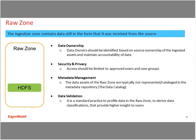Let's go into our data lake zones. The raw zone is our landing zone. The data ownership is the same as the source ownership. Security is limited to approved users and user groups. There may be some metadata already assigned to the data assets, but it has not yet been entered into our data catalog. The raw data is stored in the format that it's received, but most importantly, this is where the data is profiled and classified prior to being ingested.